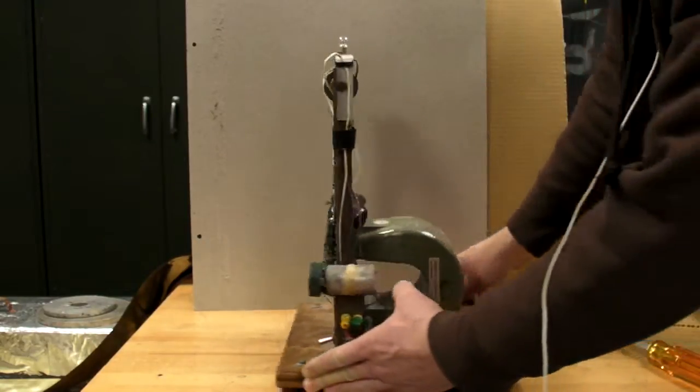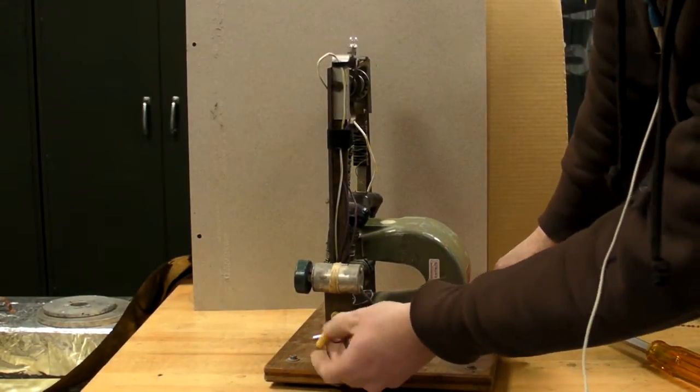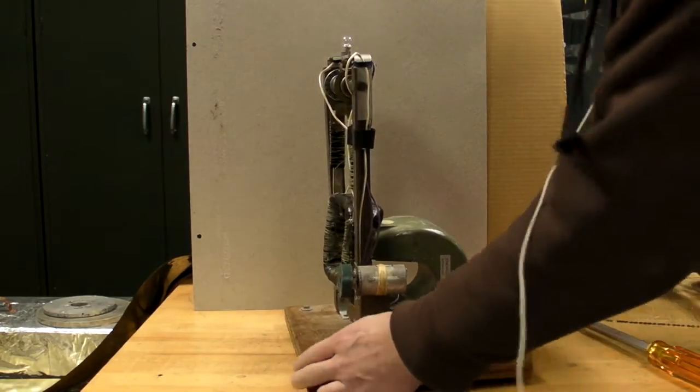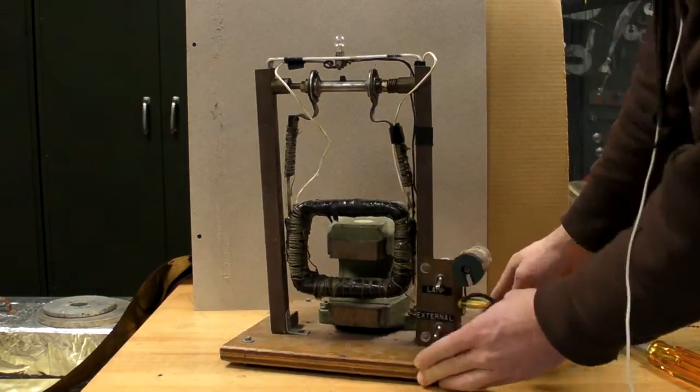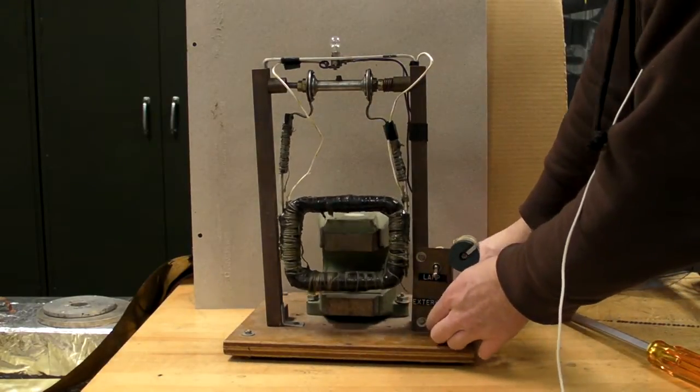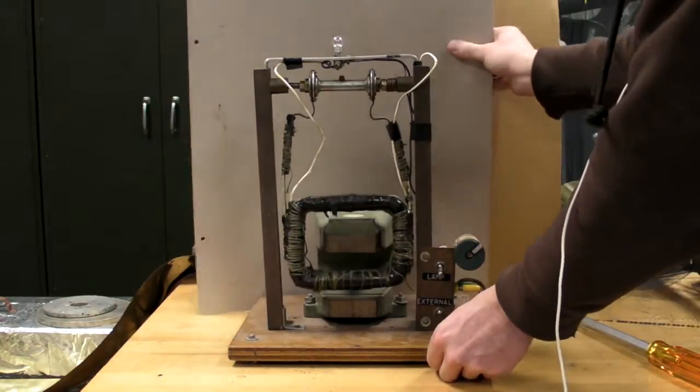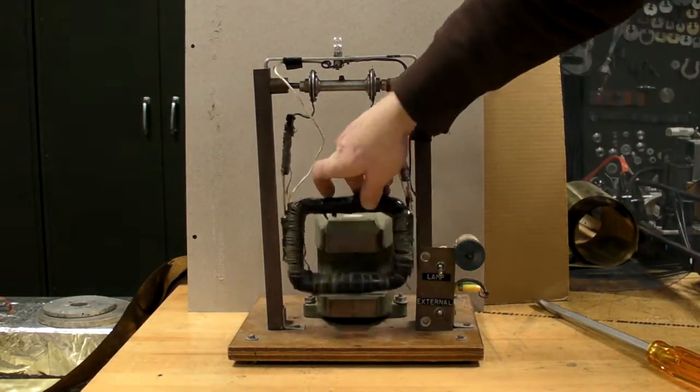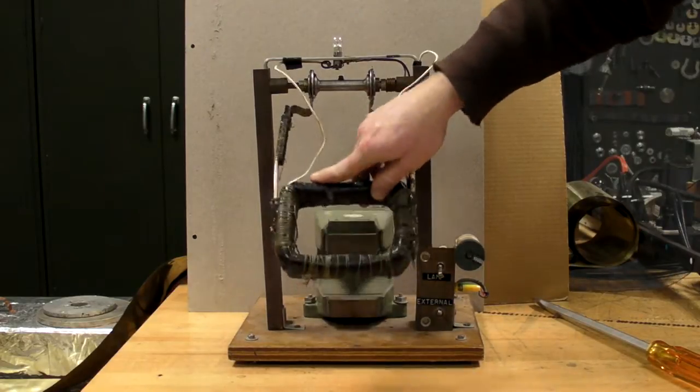Also on the side there's a couple of banana jack outputs, and there's a little DC motor hooked up to those right now. So put that on external and then we can get that motor spinning back and forth.